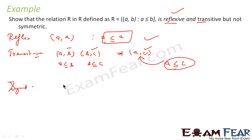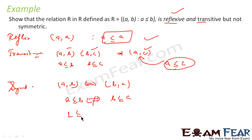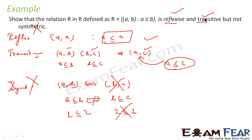Next is symmetric. For symmetric to be true, if (A, B) is a member of this relation, then (B, A) has to be true as well. But A ≤ B does not imply B ≤ A — for example, if A = 1 and B = 2, that does not mean 2 ≤ 1. So (B, A) is not a member of this relation, meaning it is not symmetric. This relation is reflexive and transitive only.